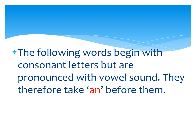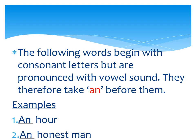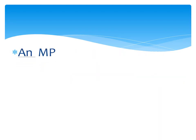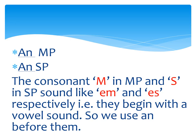The following words begin with consonant letters but are pronounced with vowel sounds, so they take An before them. For example, 'an hour' and 'an honest man.' Also, the consonant M in MP and S in SP sound like 'em' and 'es' — when we pronounce M and S, they give us the sound of a vowel A in the beginning. So they begin with a vowel sound and we use An before them.